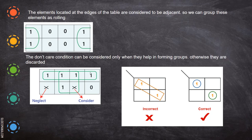Here we form a quad. In this case, we can take this X. We can make a quad like this. Either you take here or you take this — one we can neglect, only the other we consider. But you cannot combine like this where it forms a group of 6, which is not allowed.